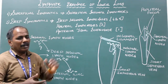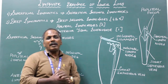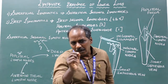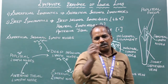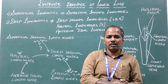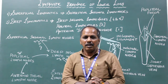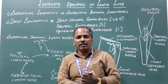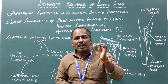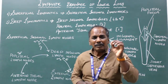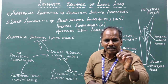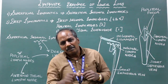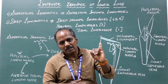One of the nodes is present in the femoral canal and is known as the gland of Cloquet or Rosenmuller. The deep inguinal lymph nodes drain the deep lymphatics of the lower limb accompanying the femoral vessels.